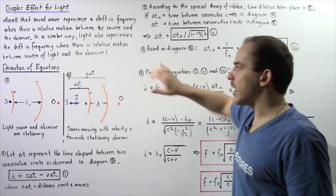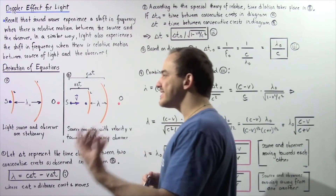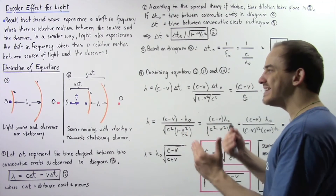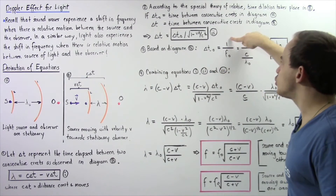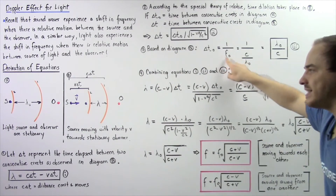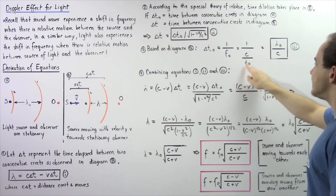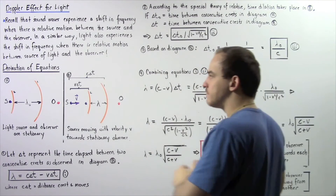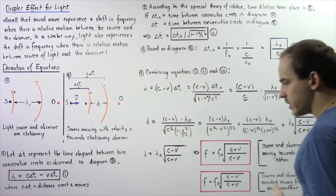Moving on to Step 3, let's examine Diagram A. In Diagram A, we have the stationary light source and stationary observer. We want to represent delta T0 in terms of frequency. Delta T0 is equal to 1 over the frequency F0 of this particular light wave. Because frequency F0 equals C divided by lambda 0, this gives us delta T0 equal to lambda 0 divided by C. Let's call this Equation 3.